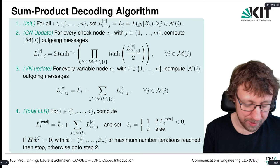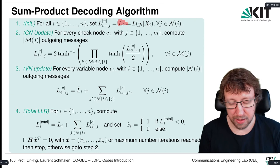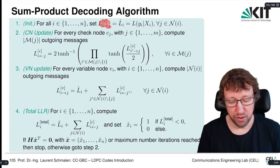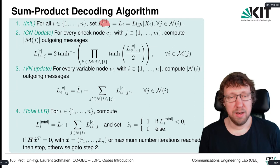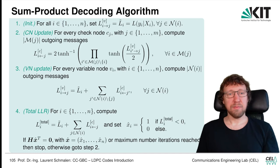The decoding algorithm starts with an initialization step. The only information available at the start is the channel transition log-likelihood ratios L̃_i = L(y_i | x_i) for every variable node. In the first step, we set L^V_{i→j} = L̃_i — that is, the initial variable-to-check node messages are just the channel LLRs.